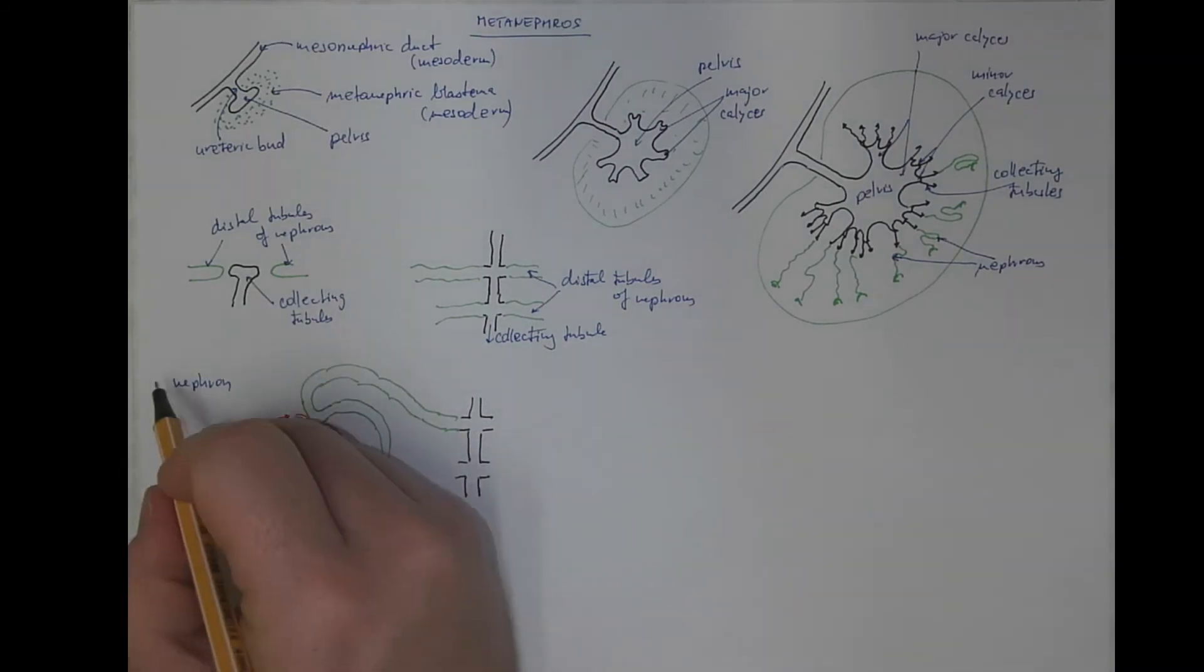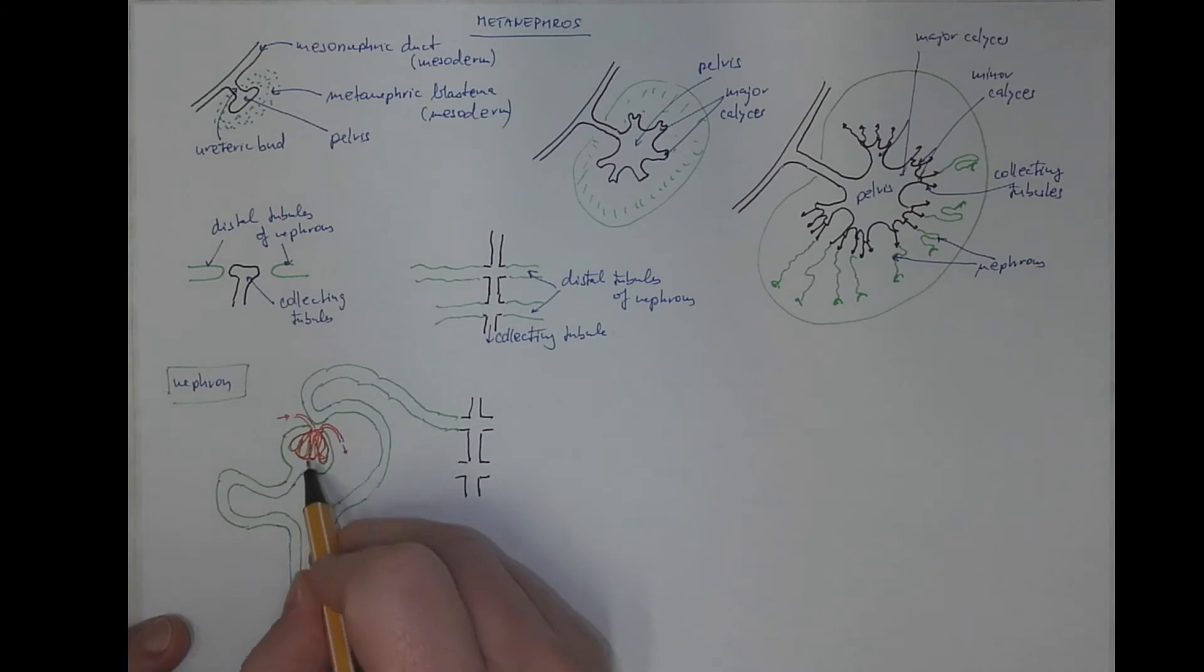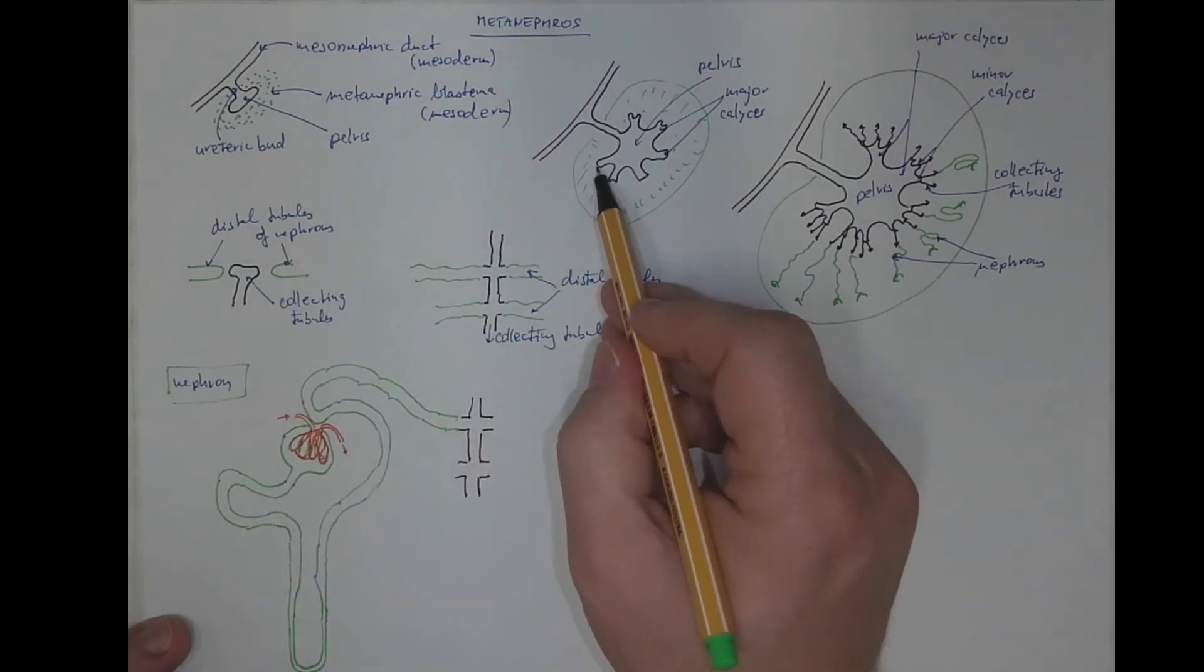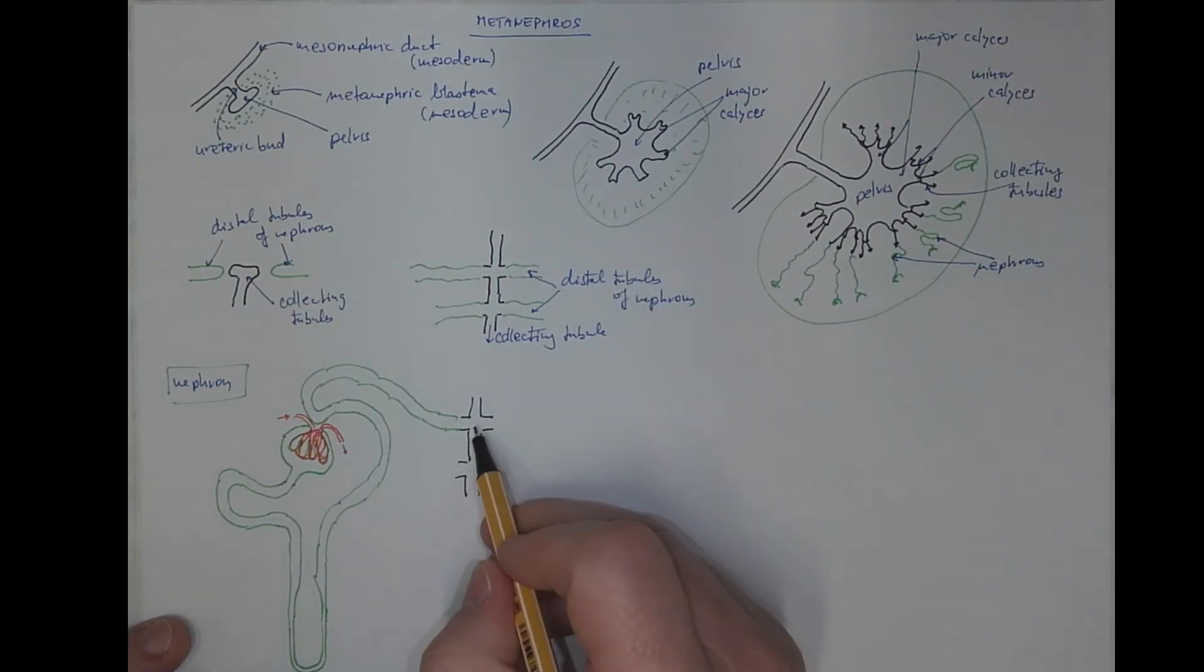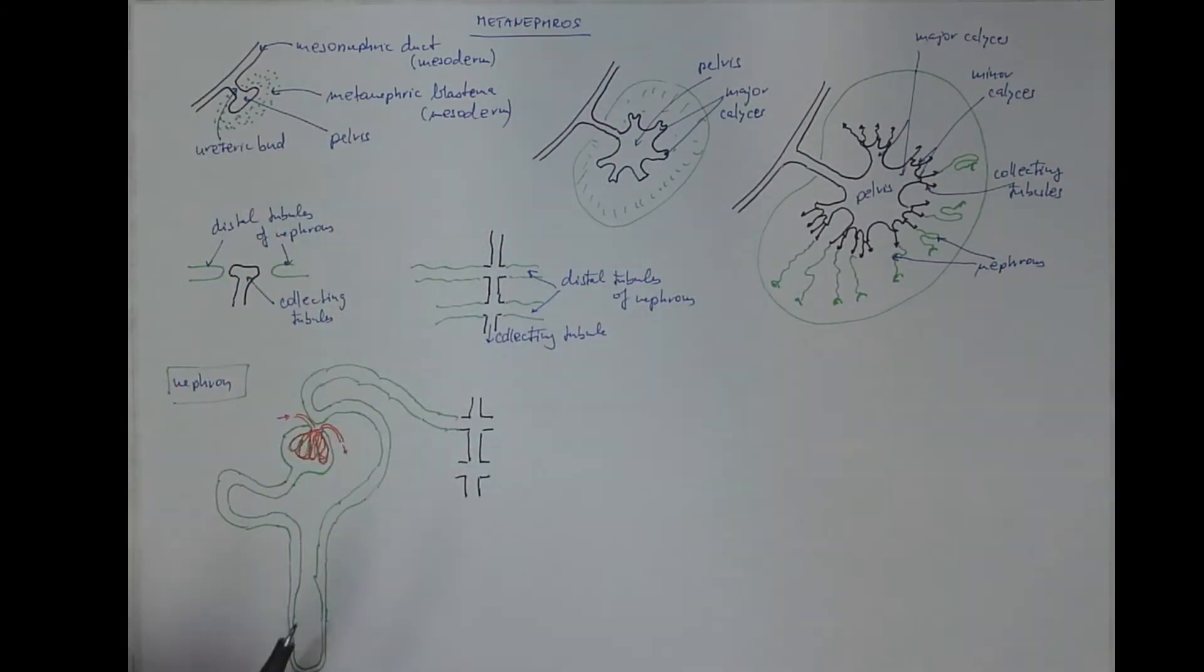...from the embryological point of view drawn in green and red originates from the metanephric blastema while the collecting duct originates from branching of the former ureteric bud.